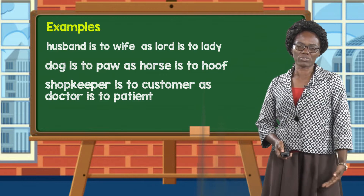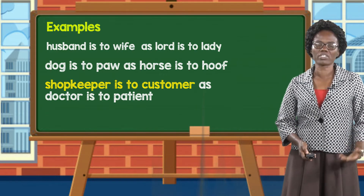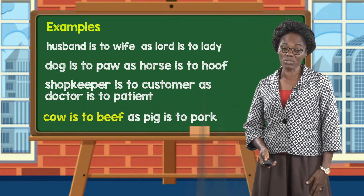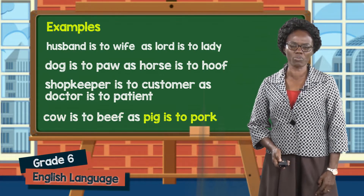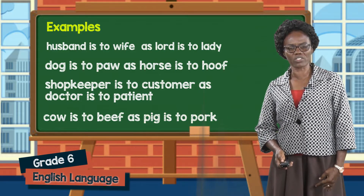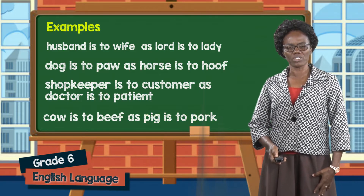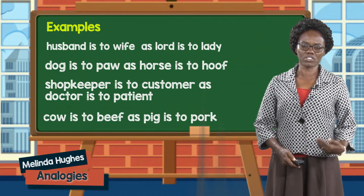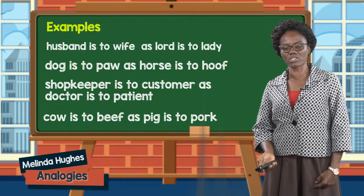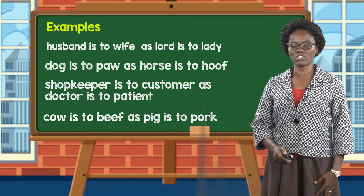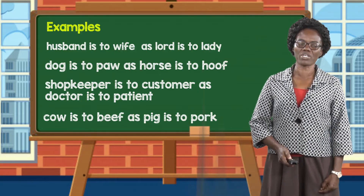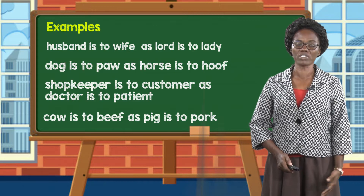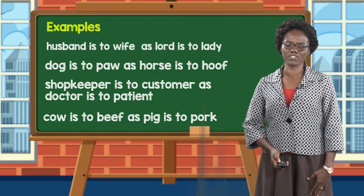We also have another example. Shopkeeper is to customer as doctor is to patient. Cow is to beef as pig is to pork. There we see the relationship between two occupations — shopkeeper to its customer and doctor to his patient. The second pair shows animals and their meat: cow is to beef and pig is to pork.